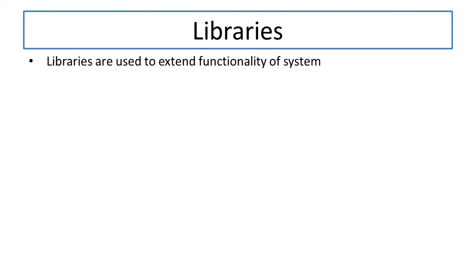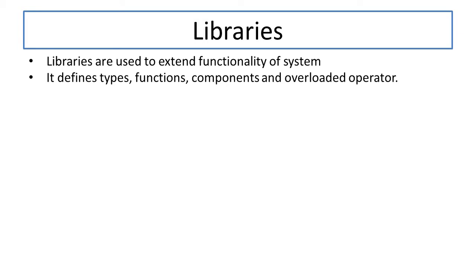Most of us are familiar with libraries. As far as libraries are concerned, they can be a set of all the components made available for the functionality of a system. Libraries are used to extend the functionality of any system. To do so, we need a set of rules, protocols, components, functions, operators, or anything required for writing code. Libraries define types, functions, components, and overloaded operators.